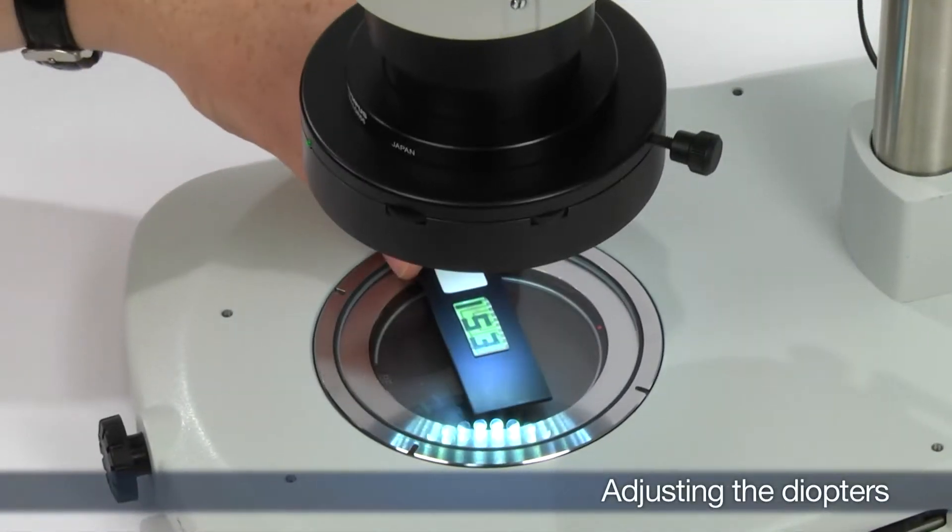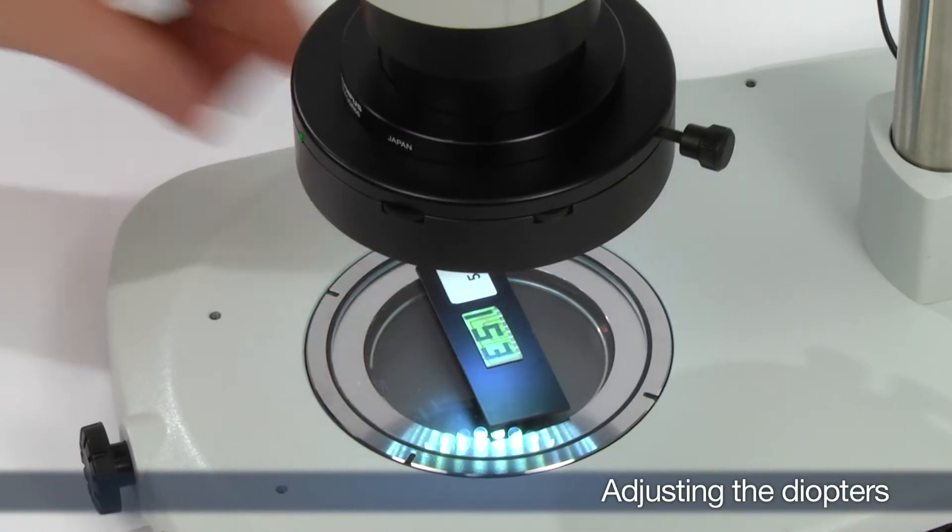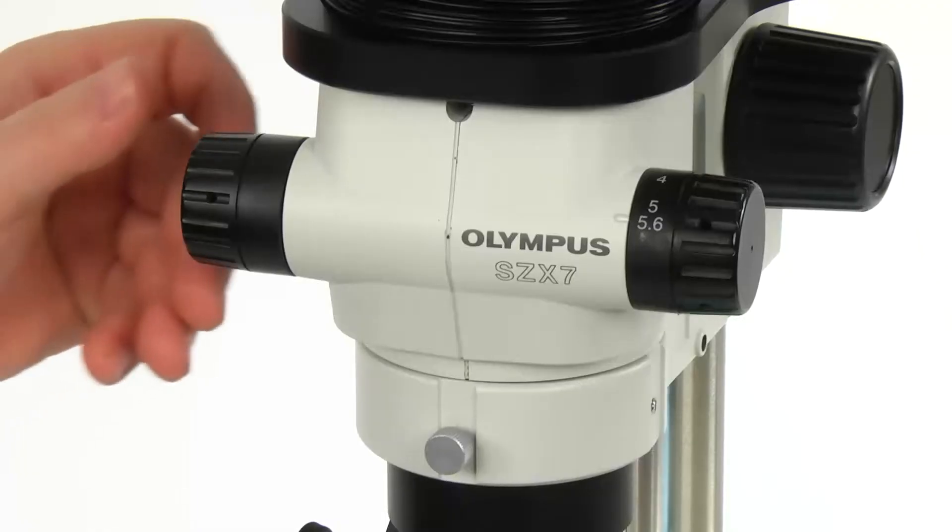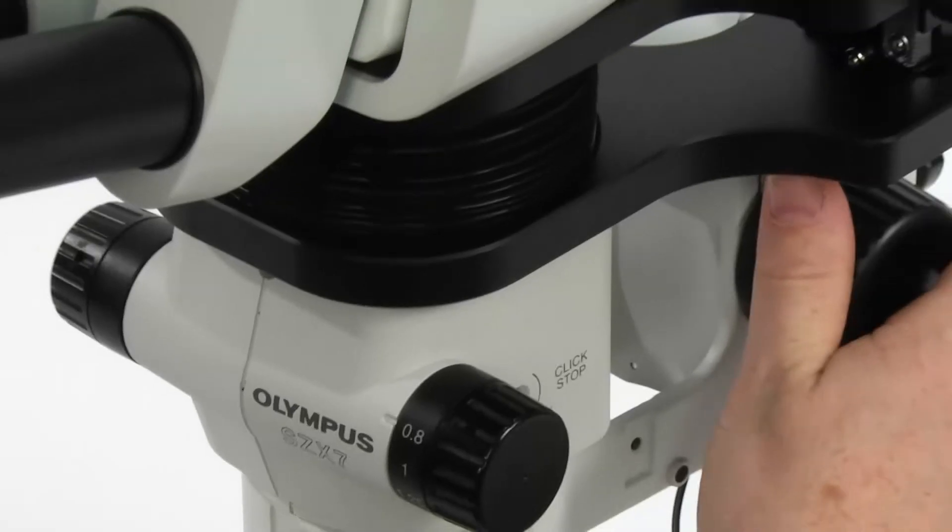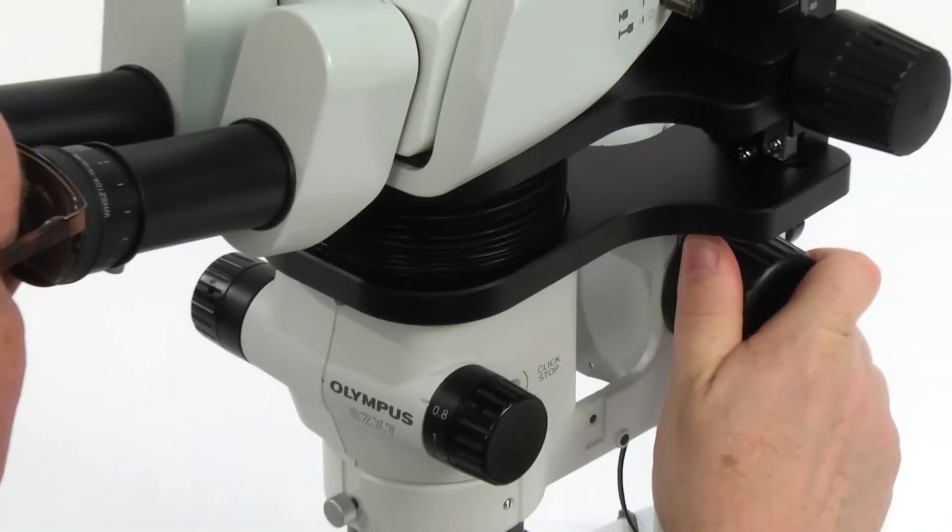First, place a simple large sample that will be easy to observe on the stage plate. Set the zoom adjustment knob for the lowest magnification and rotate the focus adjustment knob to bring the sample into focus.